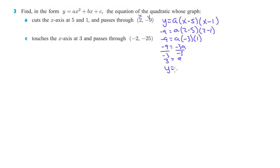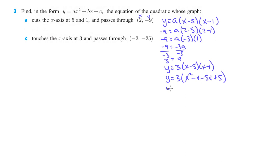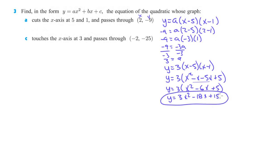So our quadratic would then be y equals 3 times (x minus 5) times (x minus 1). It does ask us to put it in standard form, so we FOIL this out and then distribute the 3. x times x is x², x times negative 1 is negative x, negative 5 times x is negative 5x, and negative 5 times negative 1 is plus 5. Combining those gives y equals 3 times (x² minus 6x plus 5). Distributing the 3 gives us 3x² minus 18x plus 15 as the equation for 3a.